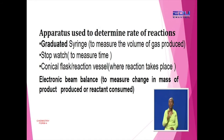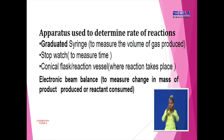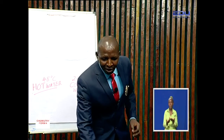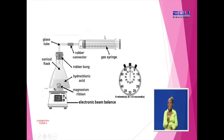Now let's look at the apparatus that are used to determine the rate of reaction. We need a graduated syringe, we need a stopwatch, and we need a conical flask — the reaction vessel — and an electronic beam balance. Let's demonstrate that using diagrams.